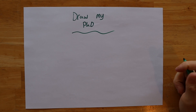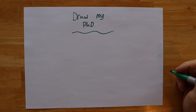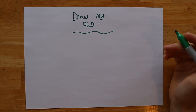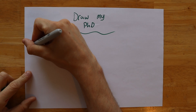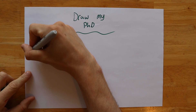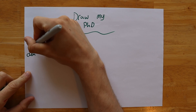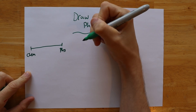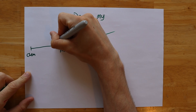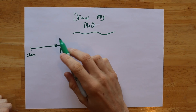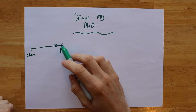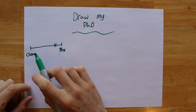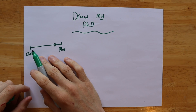Hey everyone, welcome to Draw My PhD. I'm doing a PhD in computational material science. My work sits somewhere between chemistry and physics — most of what I do is physics, my undergrad degree was in physics, but I have to learn quite a lot of chemistry to understand this.